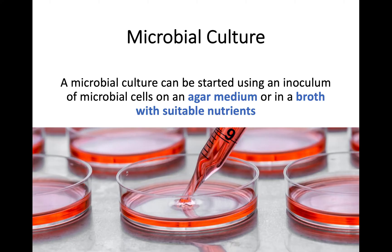In terms of the cultures themselves, if you think about that microbial culture you're trying to grow, you can start on either an agar medium in a petri dish, or in a broth with suitable nutrients. There's every chance you may use a nutrient broth which provides all the nutrients that the cell or organism requires for growth. Similarly, different forms of agar have different nutrients individualised to whatever you're trying to grow.